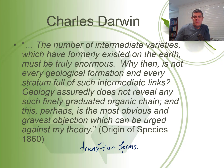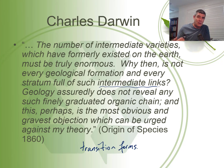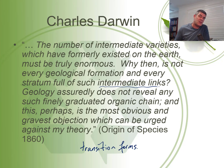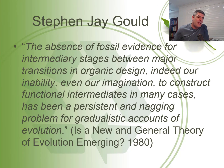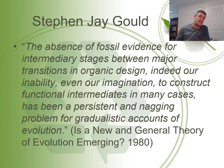So if this lack of transition forms — this lack of intermediate links, which is what Darwin called them — is still present today to a certain extent, is there any other explanation other than Darwin's idea? In 1980, Stephen Jay Gould said: "The absence of fossil evidence for intermediary stages between major transitions in organic design, indeed our inability, even our imagination, to construct functional intermediates in many cases, has been a persistent and nagging problem for gradualistic accounts of evolution."